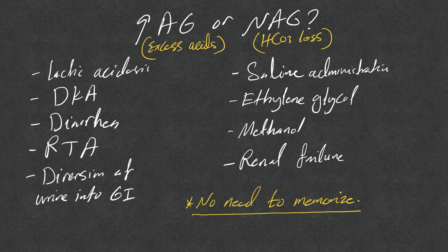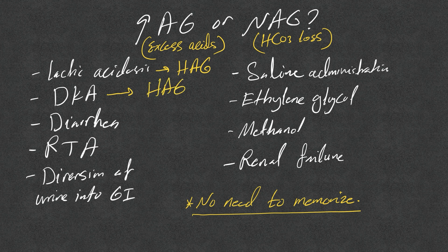Lactic acidosis: there is acid production — excess acid — that means high anion gap (HAG). DKA: endogenous acid production of ketoacids — this is high anion gap. Diarrhea leads to bicarb loss — that's normal anion gap. RTA also leads to bicarb loss — normal anion gap.